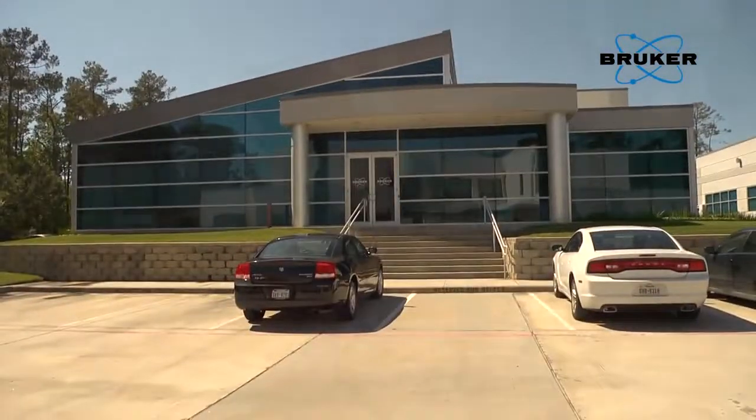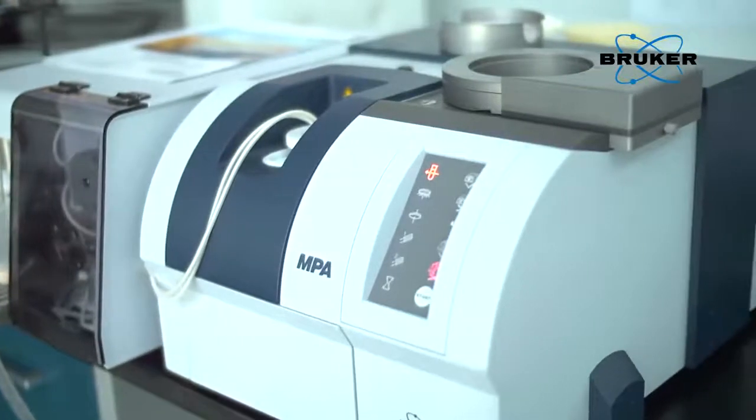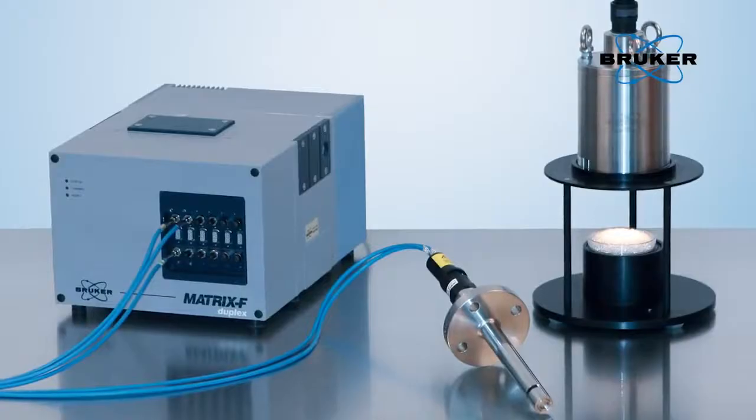Bruker's FT-NIR product line includes the Tango, the MPA, and Matrix I spectrometers for lab and at-line applications, as well as the Matrix F series for process control.